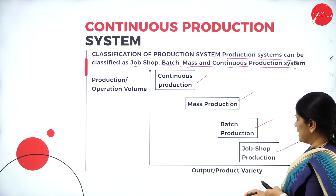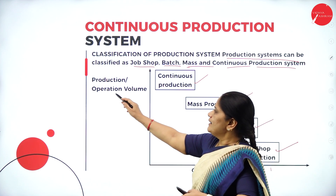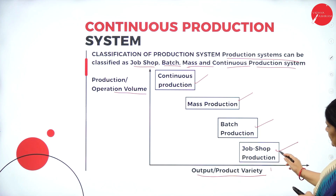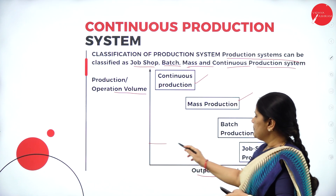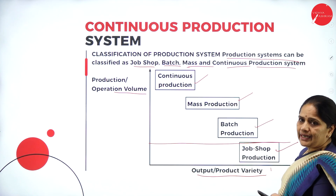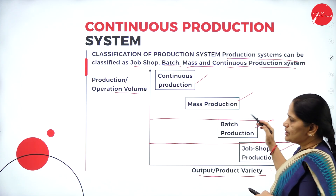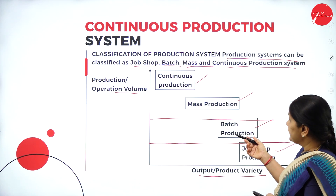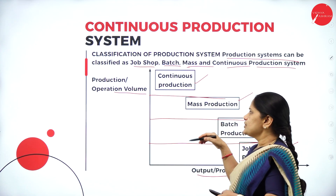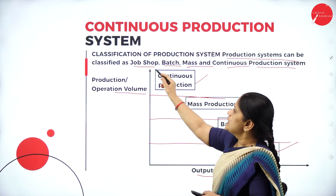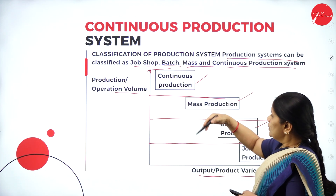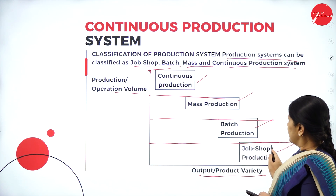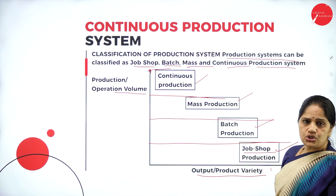Here we have the output and the product variety, and we have the production and the operation volume. In job shop production, the output is very low. In batch production, the production will be higher compared to job shop. In mass production, it will be slightly higher, and in continuous production, the production will be very high. So this is based on the volume of output — the least volume relates to job shop production.